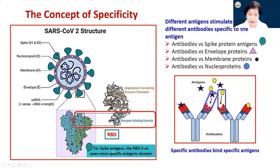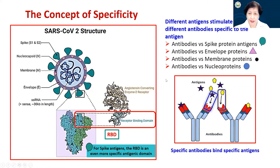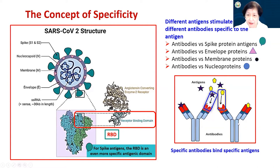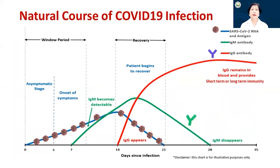There are antibody tests that will detect specifically the receptor binding domain. Different antigens will stimulate the production of different antibodies specific to the antigen — so antibodies against spike protein antigens will be different from antibodies against envelope proteins, membrane proteins, and the nucleoprotein. This complementarity means only this particular antigen will bind this particular antibody and not another — that is the concept of specificity we want to get across.